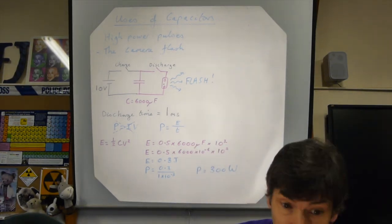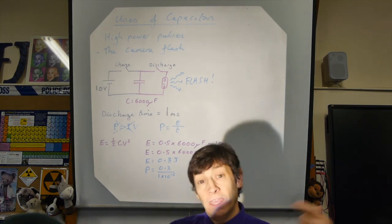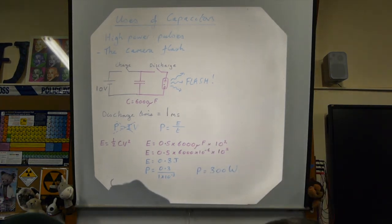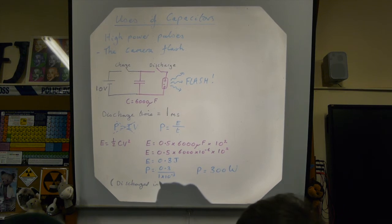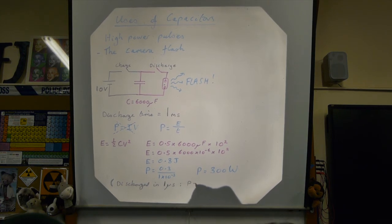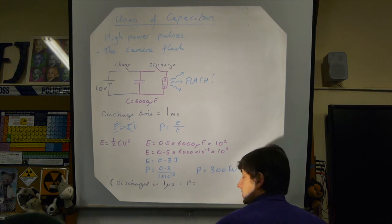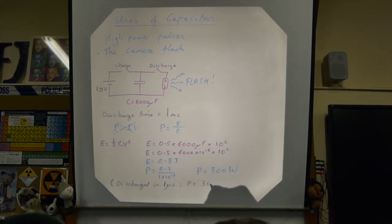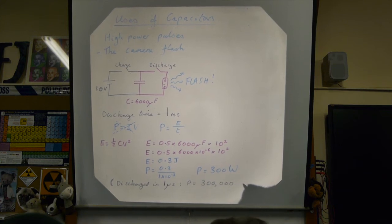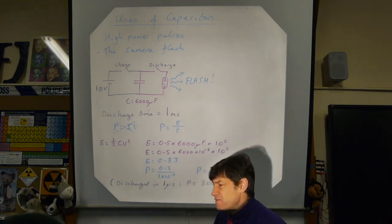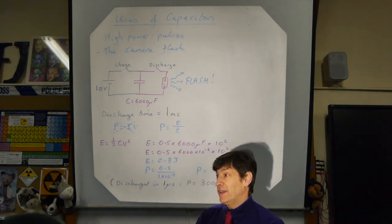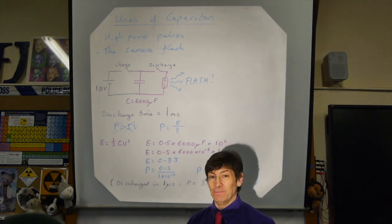If we discharged the same energy in 1 microsecond instead, the time is a thousand times shorter, so the power would be 300,000 W — 300 kW. That's how a capacitor can create very short bursts of exceptionally high power.